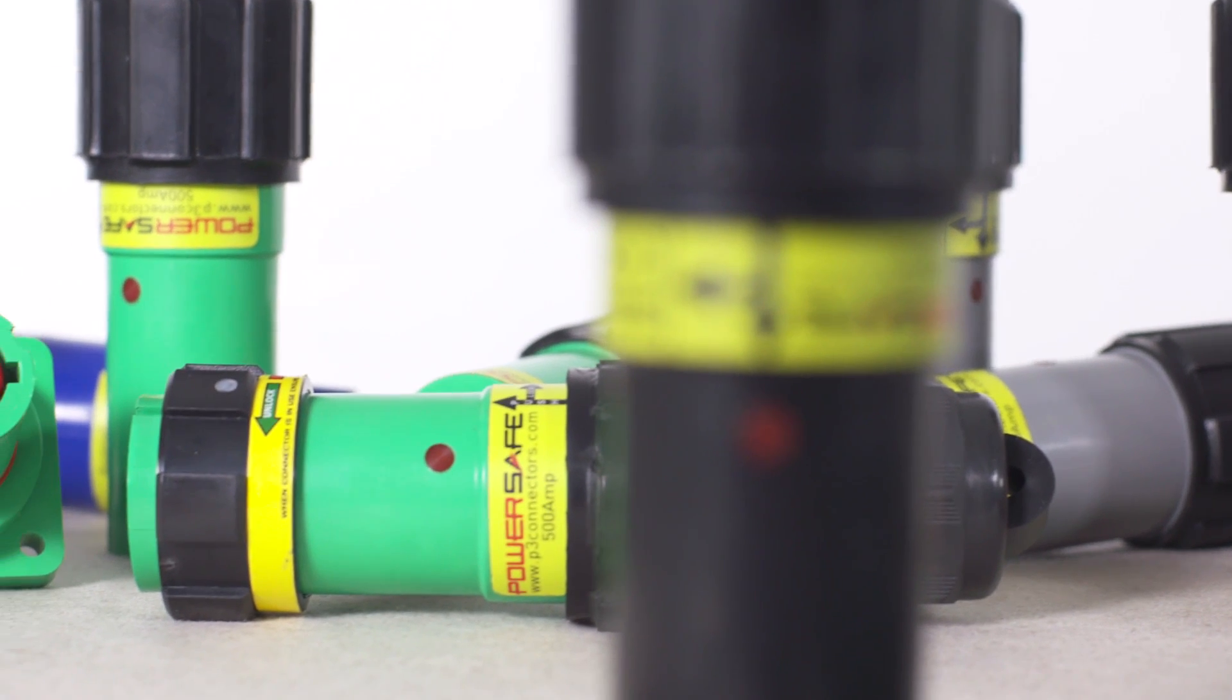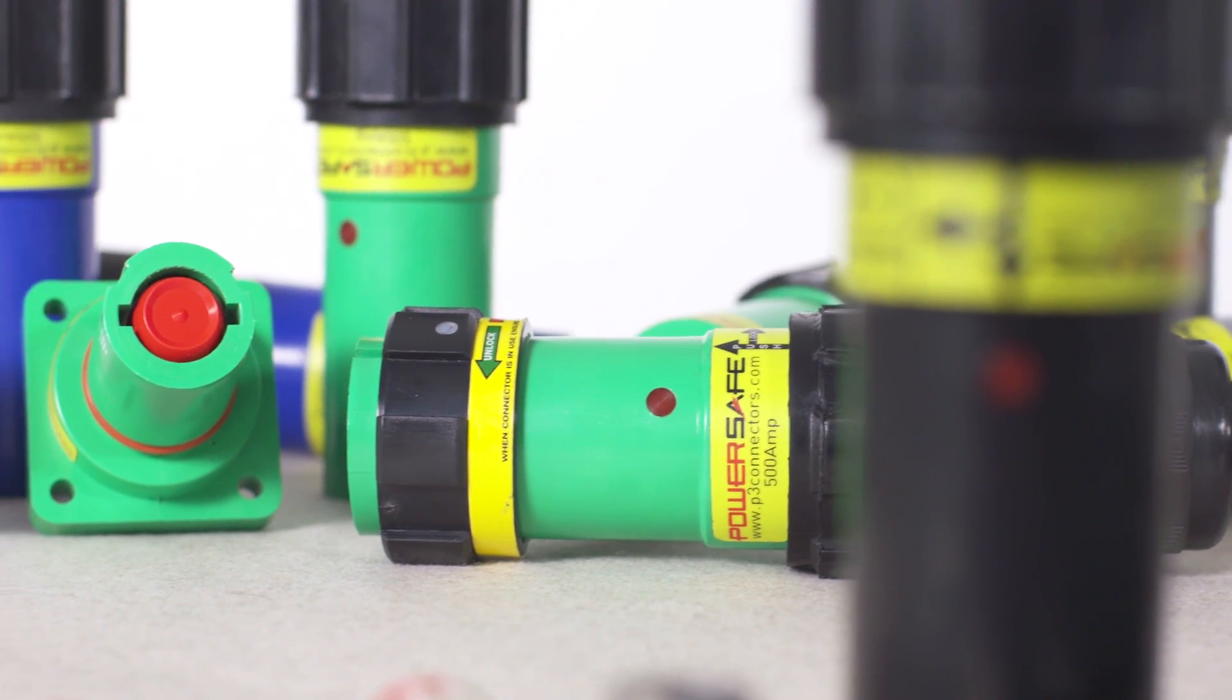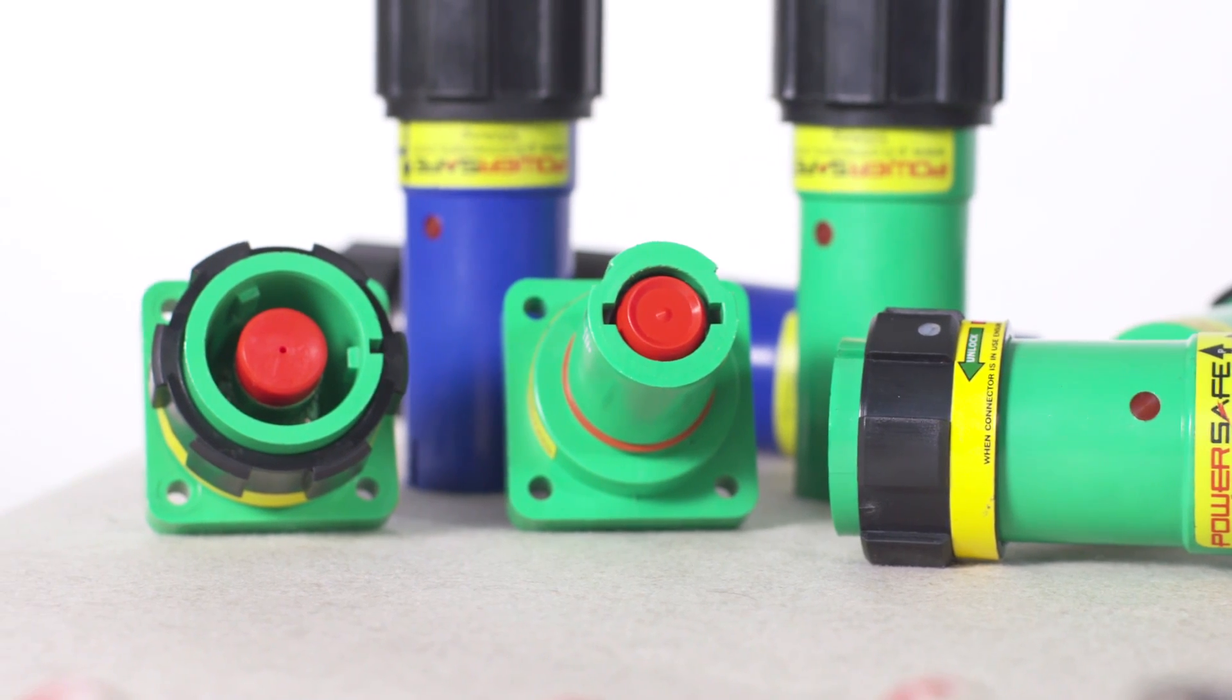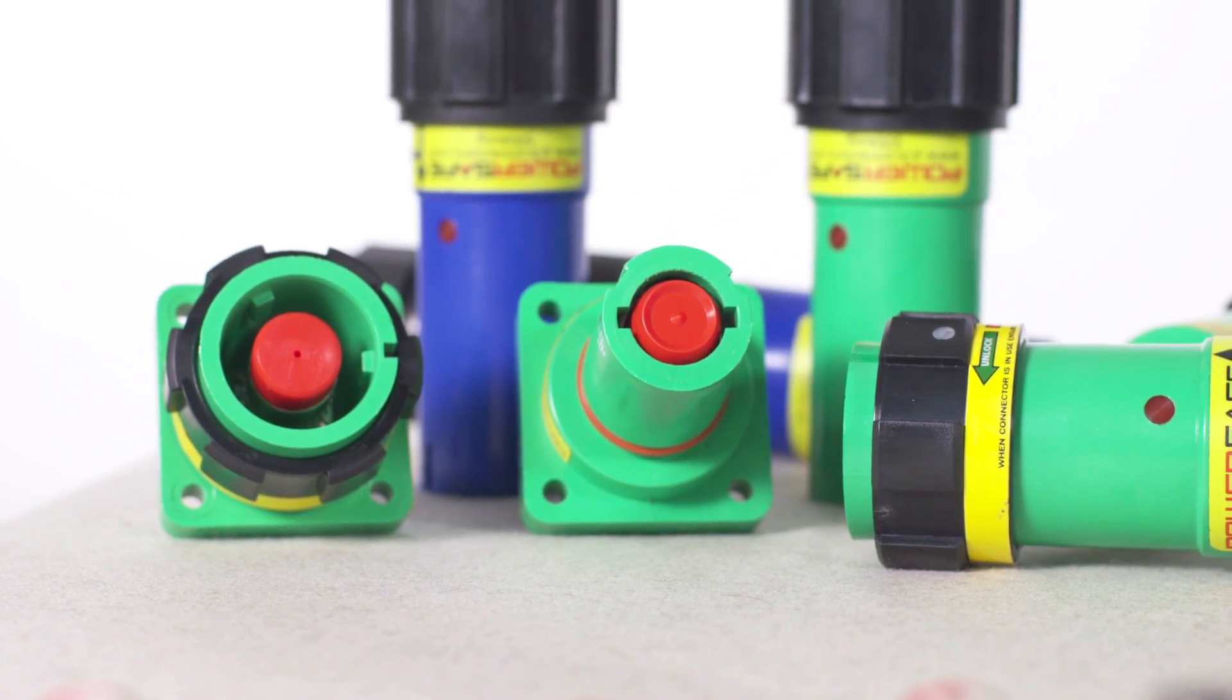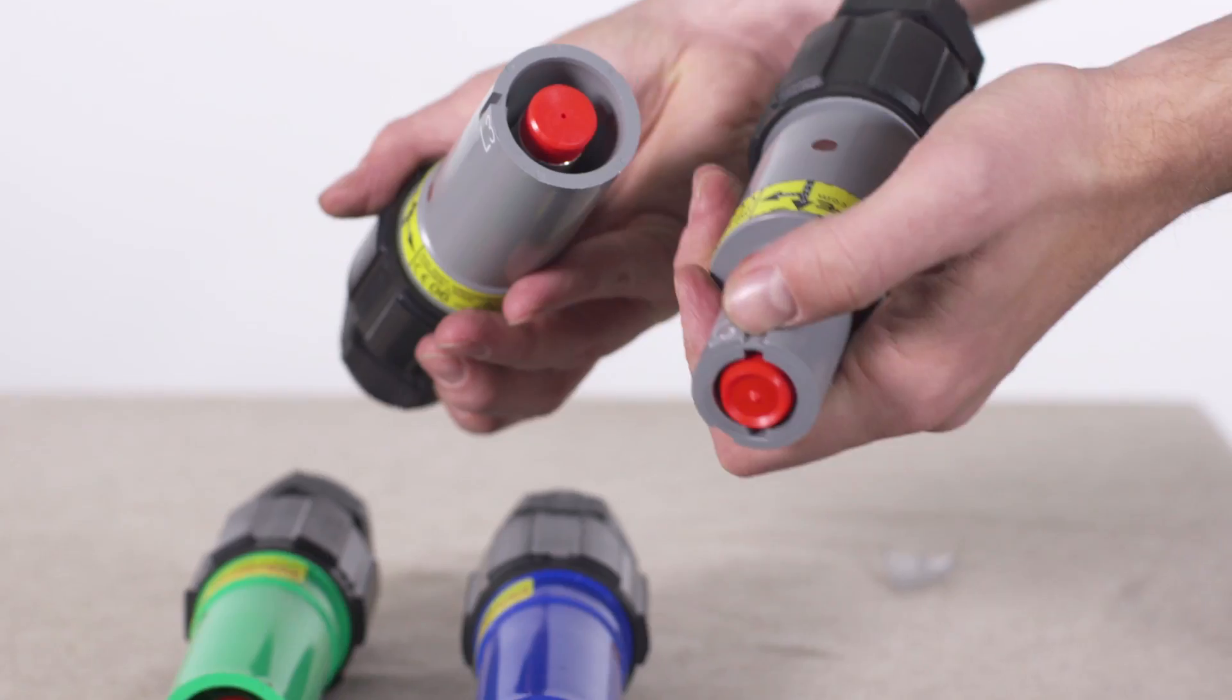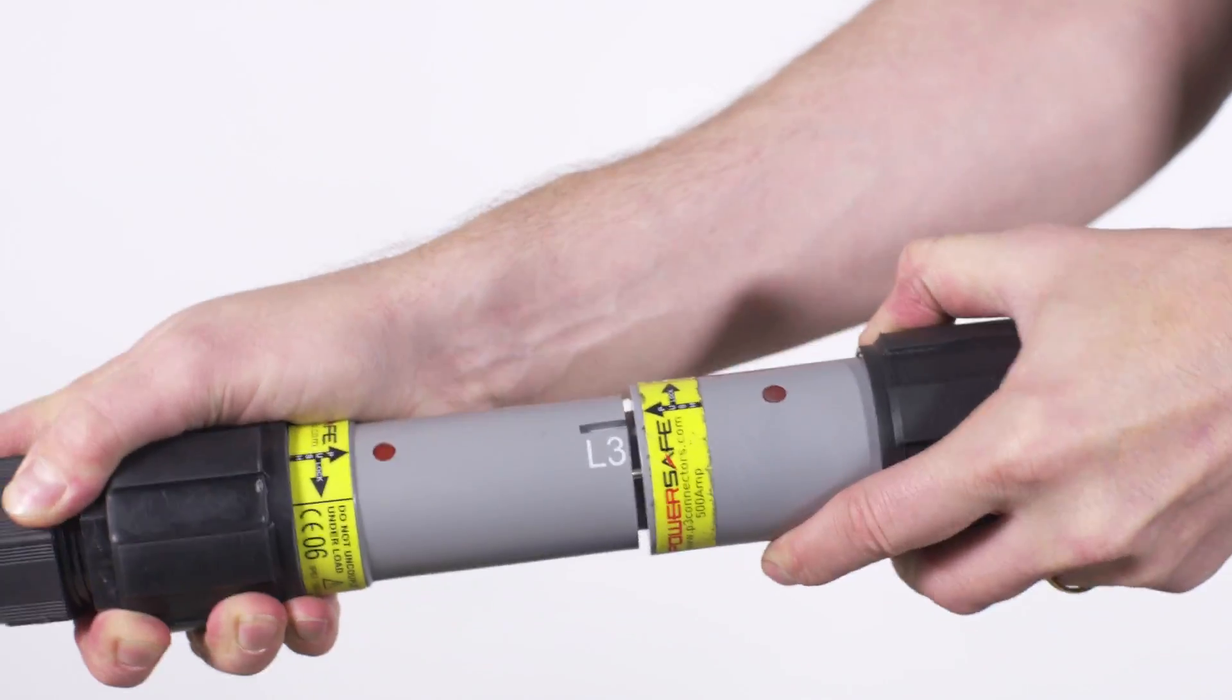The PowerSafe connector has safety features that help to protect the user against potentially fatal electric shock and other dangers as a result of connection errors. Such features include finger-proof electrical contacts, color-coded insulators, mechanical keys and locking devices.